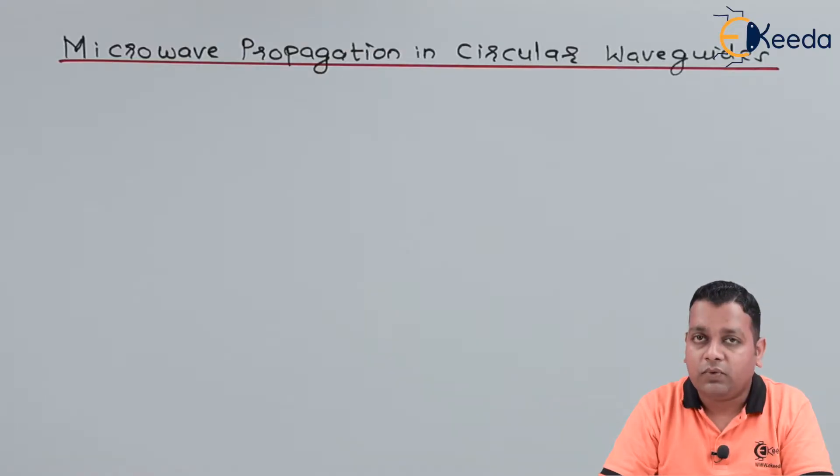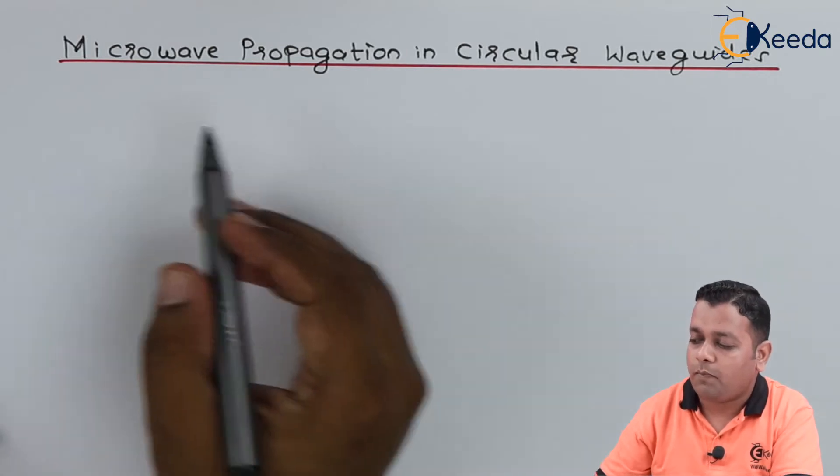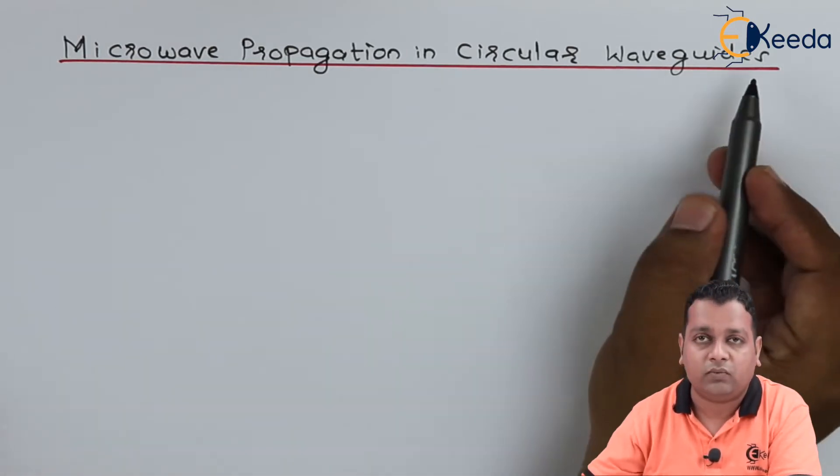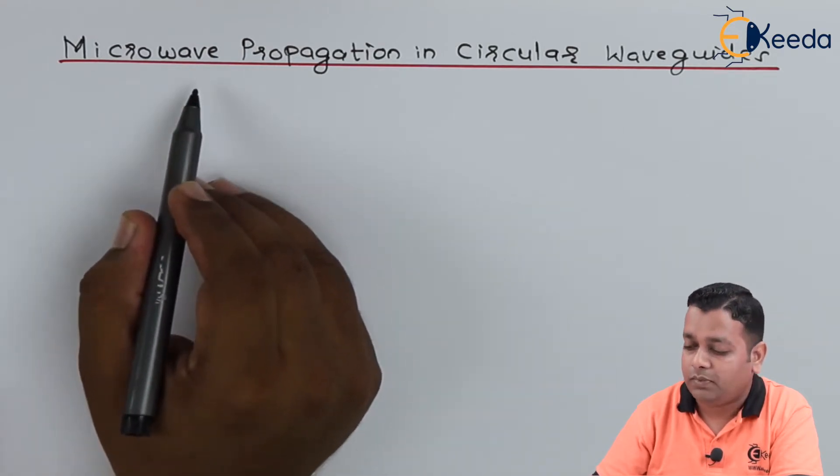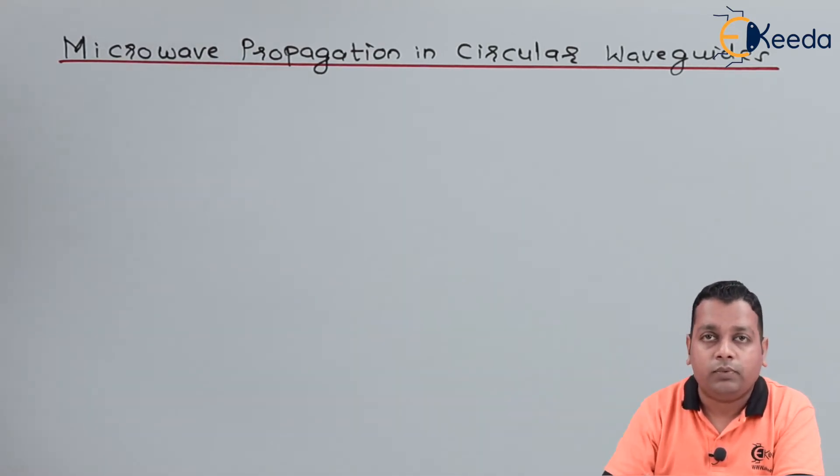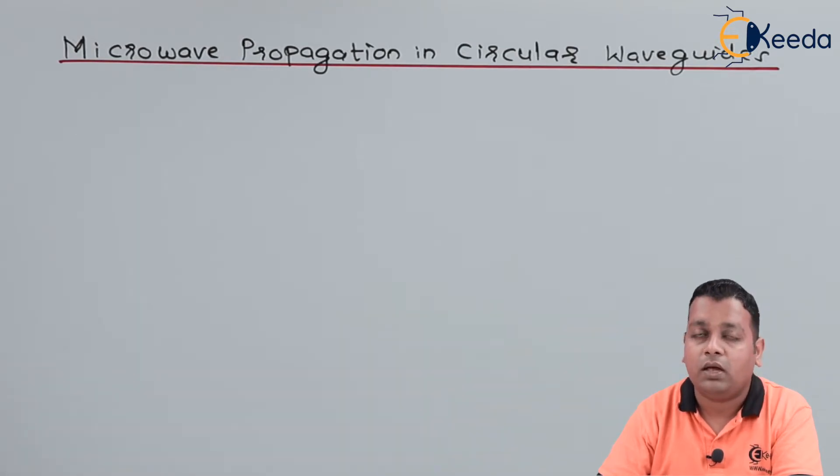So here we start with our topic microwave propagation in circular waveguides. As the first term into the title of this topic is microwave, I hope it is very clear that it is basically electromagnetic wave with a particular frequency range from 1 gigahertz to 300 gigahertz.